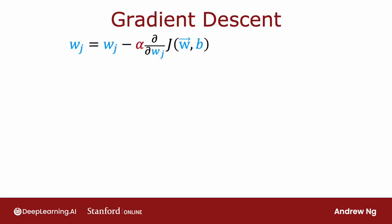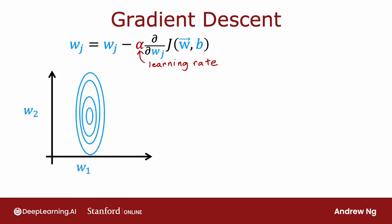Recall that this is the expression for one step of gradient descent. A parameter wj is updated as wj minus the learning rate alpha times this partial derivative term. How can we make this work even better? In this example, I've plotted the cost function J using a contour plot comprising these ellipses. And so the minimum of this cost function is at the center of these ellipses down here.